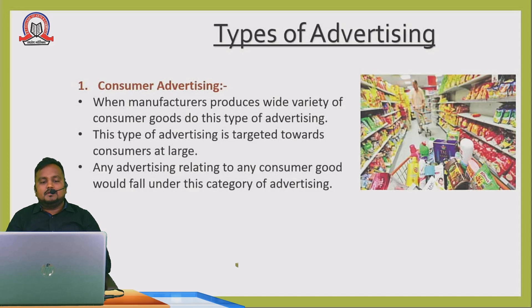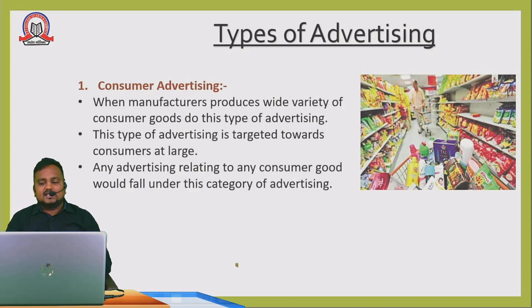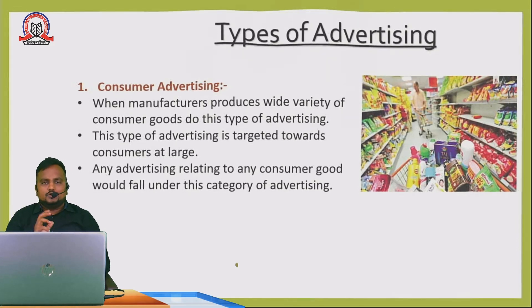The first type is consumer advertisement. When the manufacturer produces a wide variety of consumer goods, they do this type of advertisement. This type of advertisement is targeted towards consumers at large. For example, brands like Nestle or Cadbury have many products. You can see in the picture on screen many products together — that is consumer advertisement. It is directly for consumers and is known as consumer advertisement.